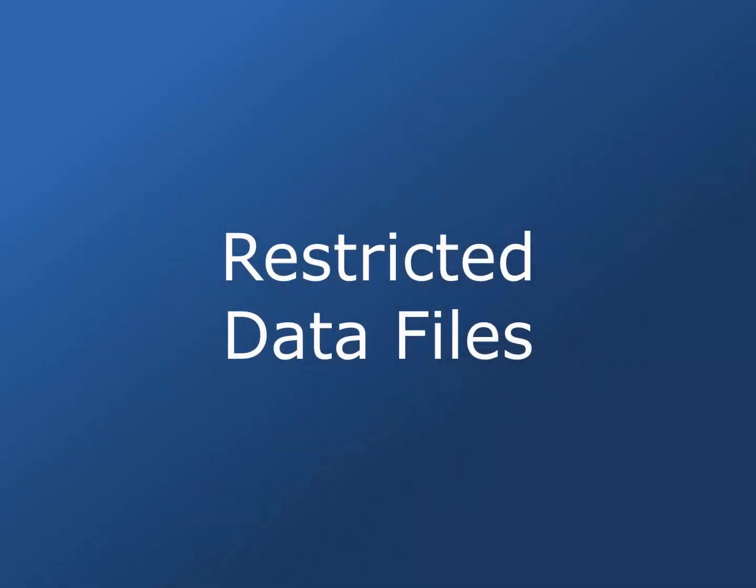In order to safeguard the confidentiality of respondents, some PSID data are provided under contract between the researchers' institution and the University of Michigan. We refer to these as restricted data files. There are three basic types of restricted files: files with geographic identifiers, administrative linkages, and other data that are considered either sensitive or that may potentially increase the risk of disclosure.